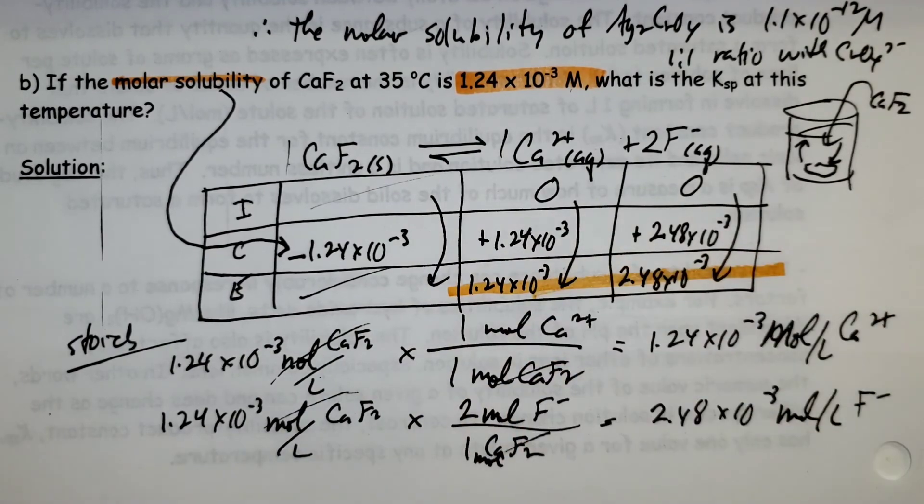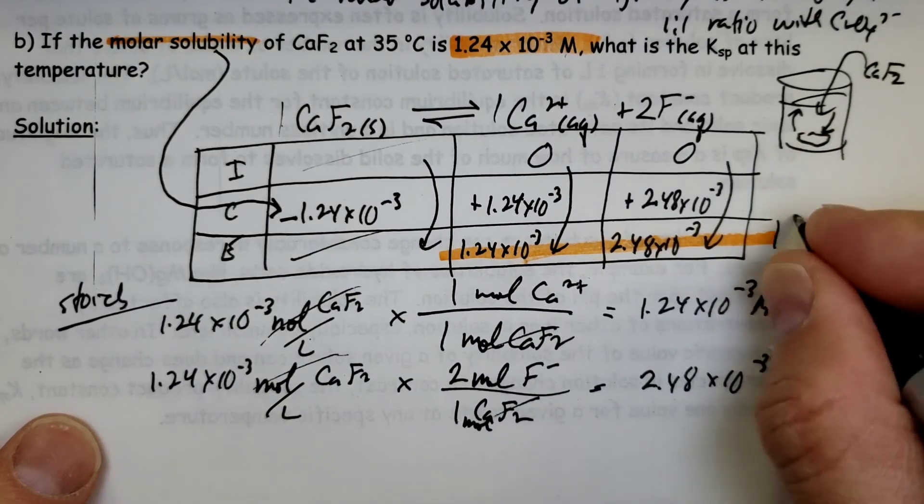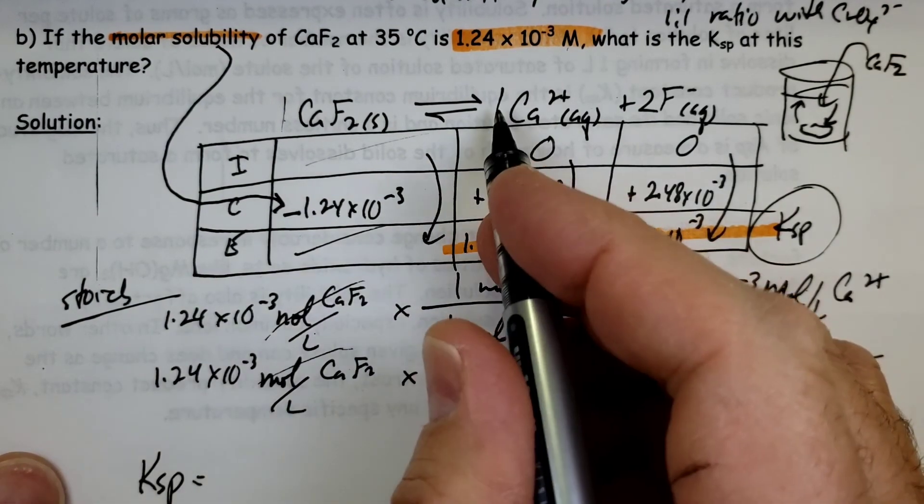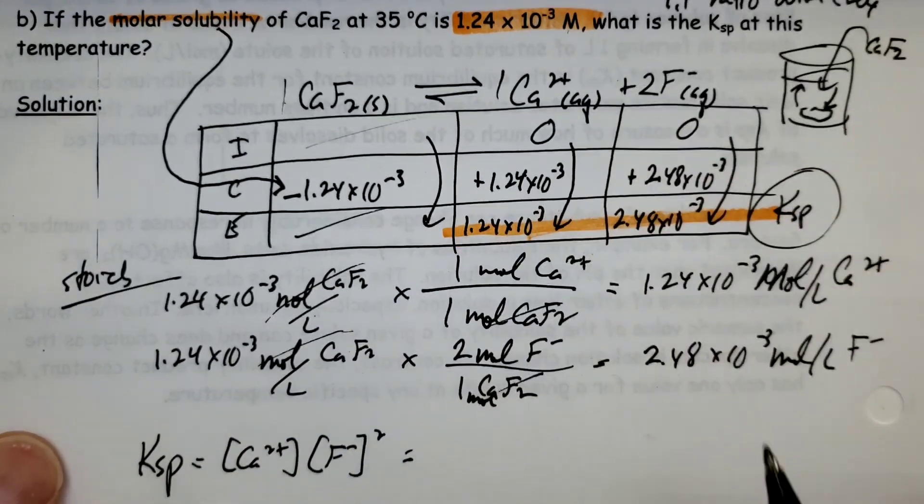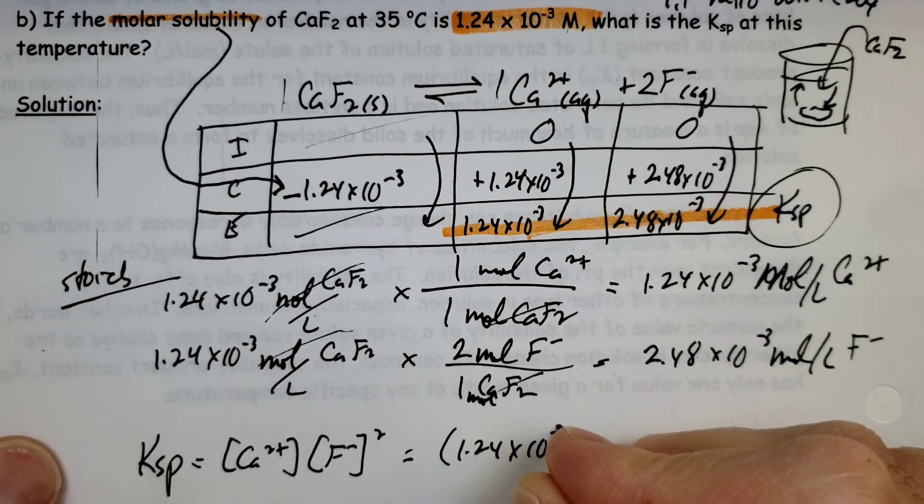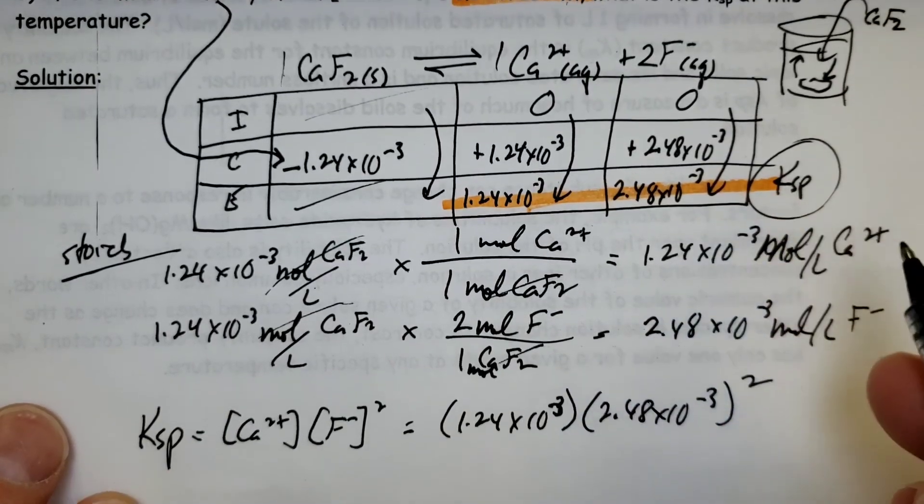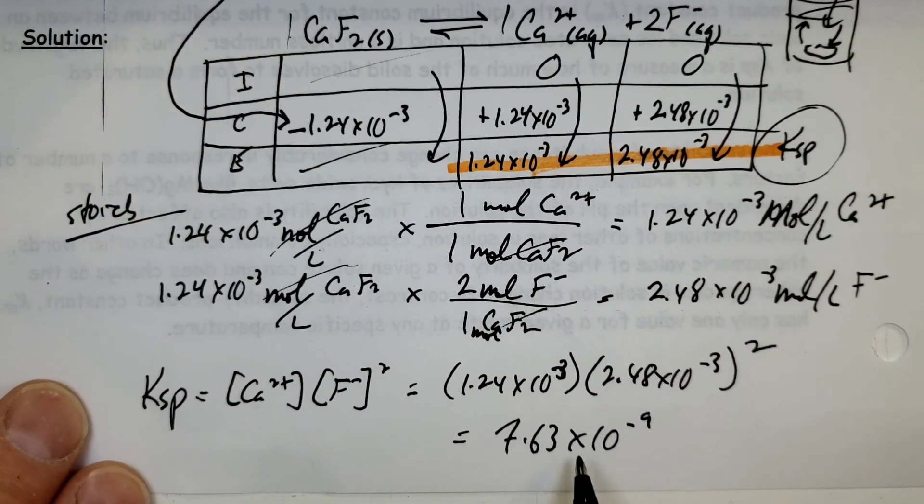That equilibrium amount represents after time has passed and I've made a saturated solution. So that gets used in the Ksp calculation. Ksp equals calcium times fluoride. And of course, fluoride has an exponent of 2 because I have two of them for every one calcium. So 1.24 times 10 to the minus 3 times 2.48 times 10 to the minus 3 squared. That gives me 7.63 times 10 to the minus 9. Really small number, right? So again, we're told here that not a huge amount dissolves, but we do have some dissolving leading to that number.